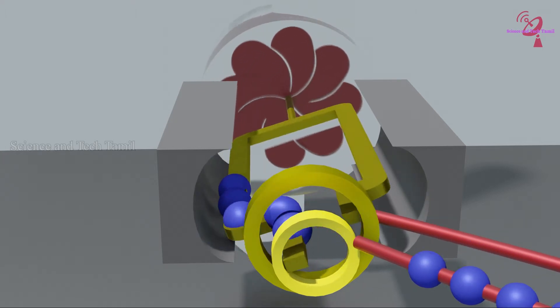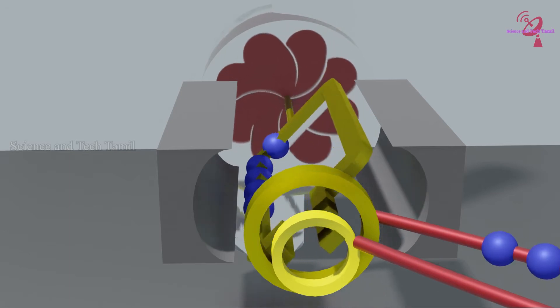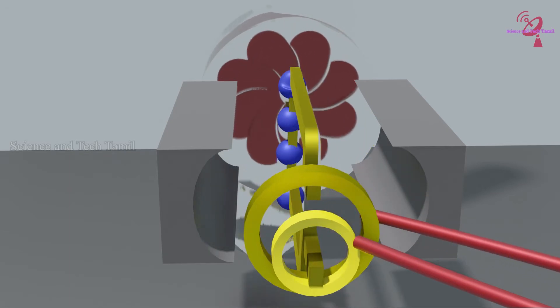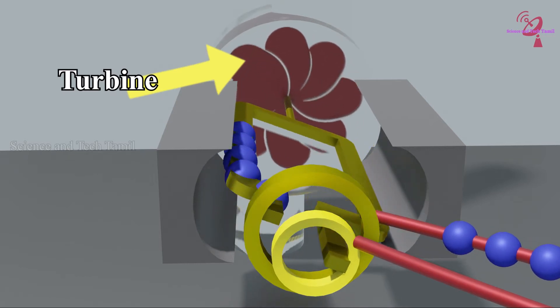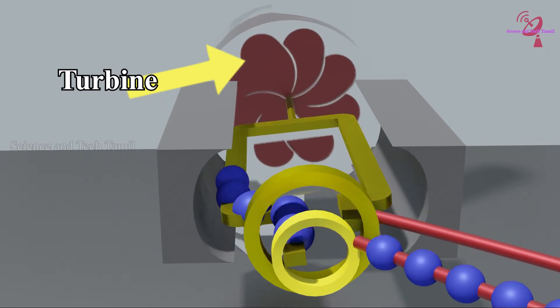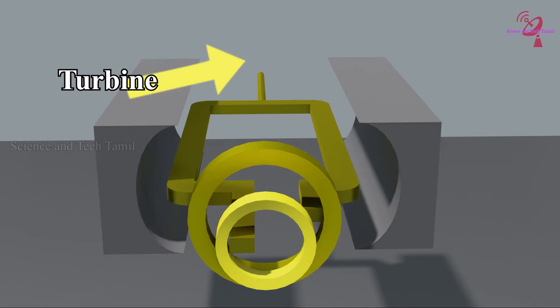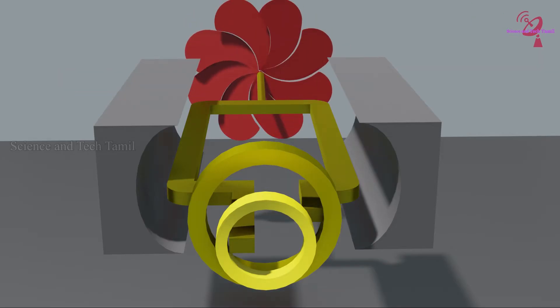To rotate this coil, external force is a must. The coil is attached to one end of a connecting rod, and the other end of this rod is connected with the turbine, which gives sufficient external rotation force to turn the coil. Let's see how the turbine gets energy.